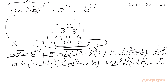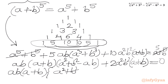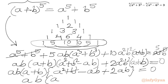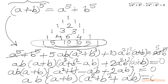We notice that ab and (a + b) are common factors. Using the algebraic formula a³ + b³ = (a + b)(a² + b² - ab), we factor: ab(a + b)(a² + b² - ab) + 2a²b²(a + b) = 0. Taking ab(a + b) as common gives ab(a + b)[(a² + b² - ab) + 2ab] = 0, which simplifies to ab(a + b)(a² + ab + b²) = 0.